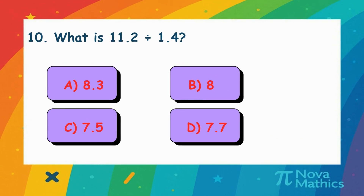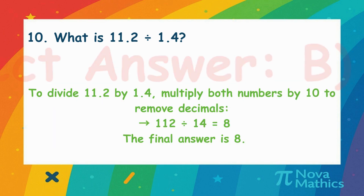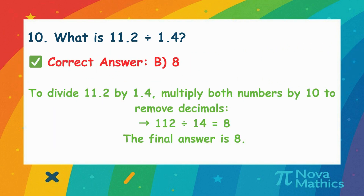9. What is 11.2 divided by 1.4? We want to divide 11.2 by 1.4. Multiply both by 10 to make them whole numbers. 112 divided by 14 equals 8.